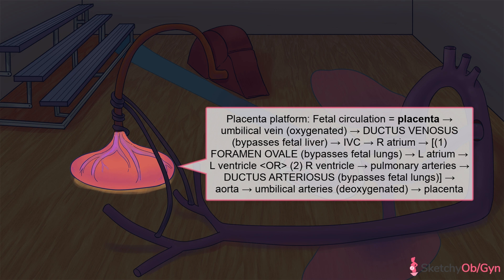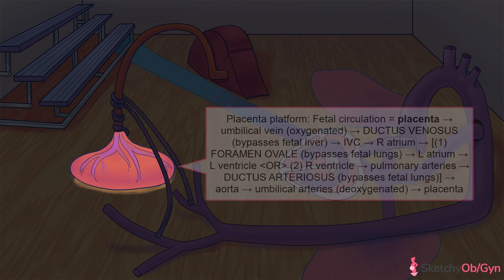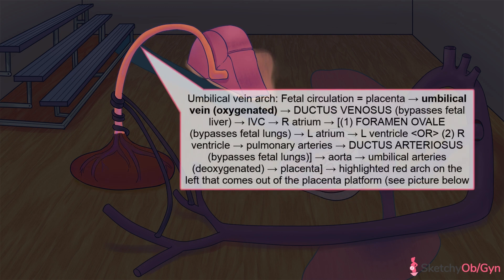The road to the placenta is a three-lane highway comprised of the umbilical vein and umbilical arteries. The umbilical vein carries oxygenated blood from the placenta to the fetus, which is why this umbilical vein arch is red, symbolizing fully oxygenated blood.